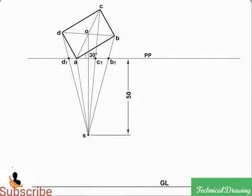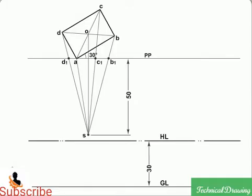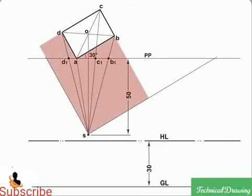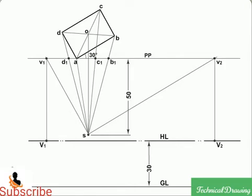Draw the ground line GL at any distance below PP and the horizon line HL 30mm above GL. Through S, draw lines parallel to AD and AB, cutting PP at points V1 and V2 respectively. Project V1 and V2 onto HL. V1 and V2 are the vanishing points.